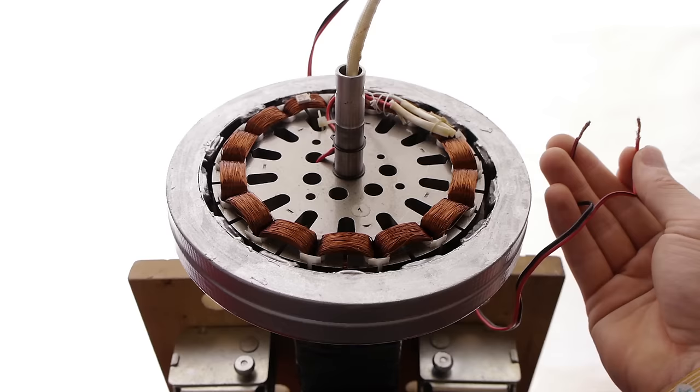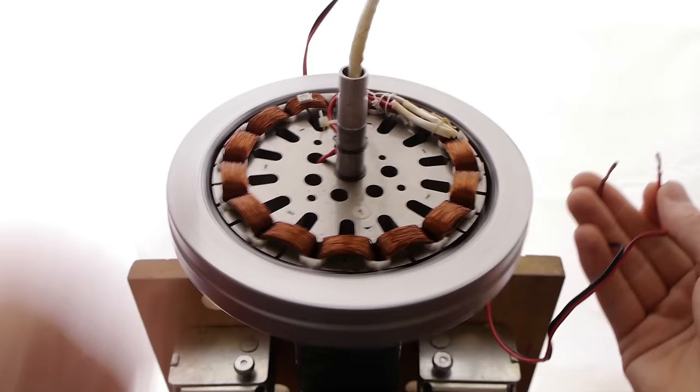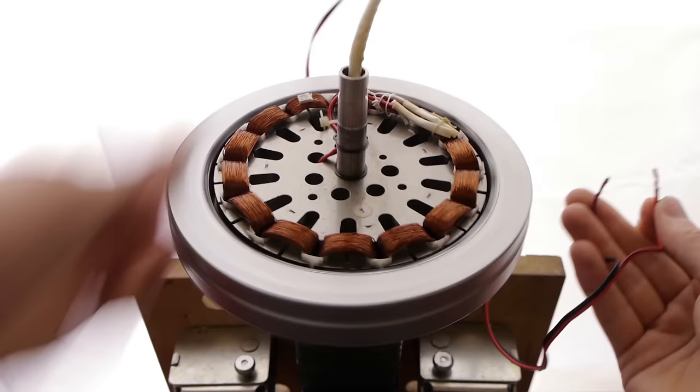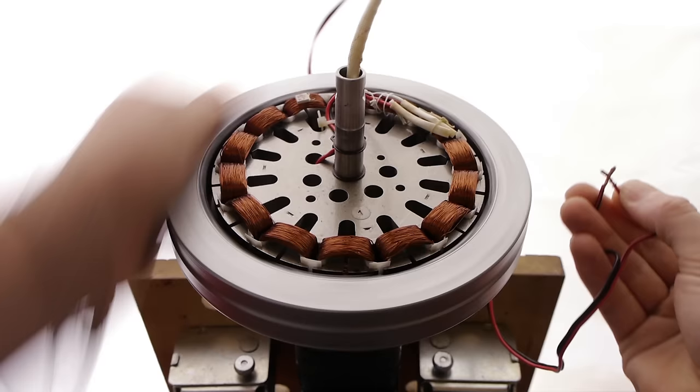The generator spins well, not too much magnetic cogging. And look what happens when you make a short circuit. As soon as the two wires touch, the rotor stops spinning. That's a good sign. Current is flowing. Lenz's law at work.